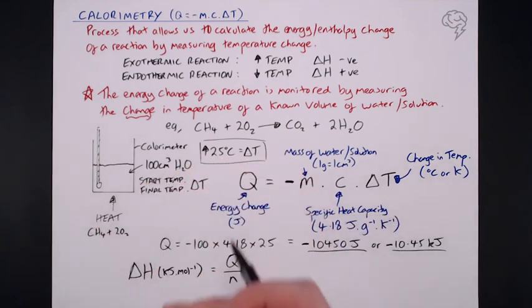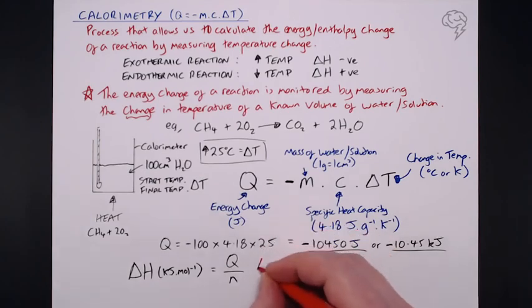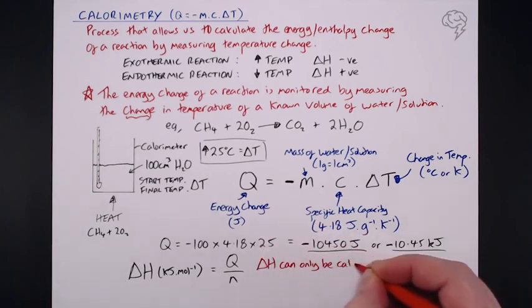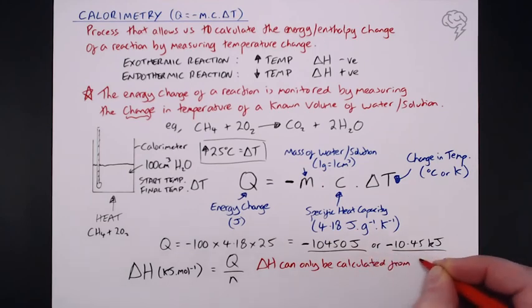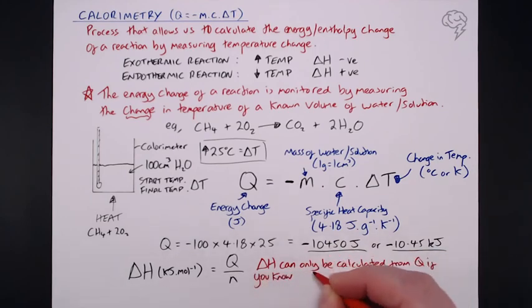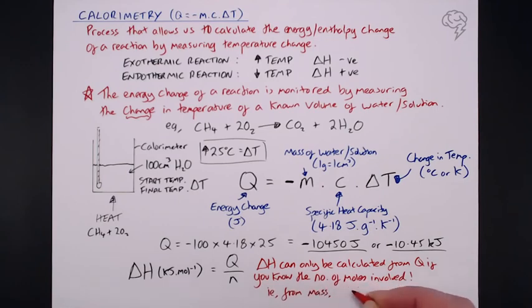Now, we didn't measure this. We just used a Bunsen burner, and we didn't measure the mass of the methane that we actually burned. So, we don't have that value, so we can't do that here. In the next couple of tutorials, I'll run through a couple of examples on this. So, really importantly, you can only find delta H from Q if you know the number of moles involved, i.e. maybe you've got a mass, or maybe you've got a concentration and volume if you're dealing with a solution. You can find the number of moles that way. But either way, somehow, you've got to find the number of moles if you're going to find delta H.